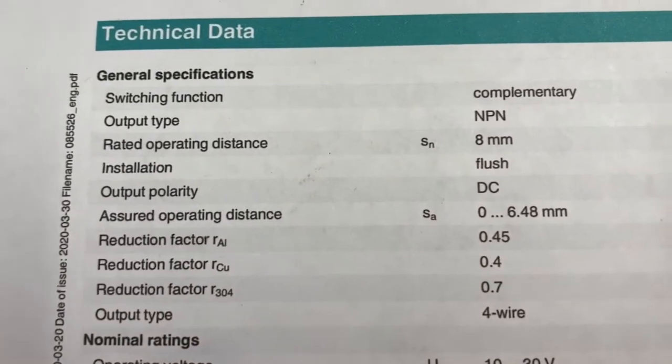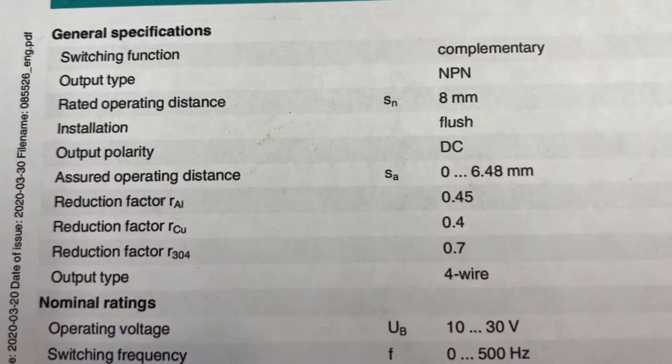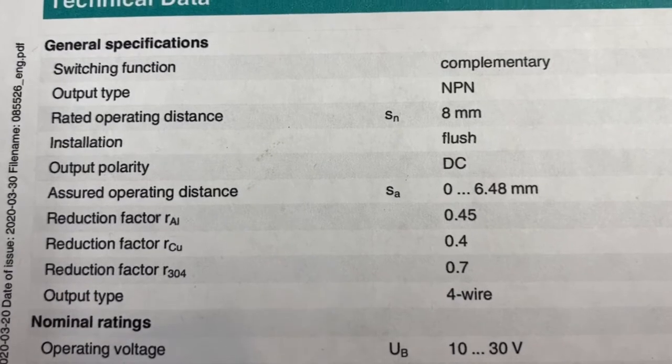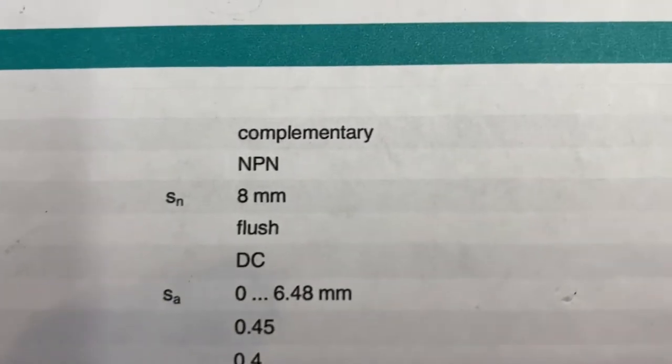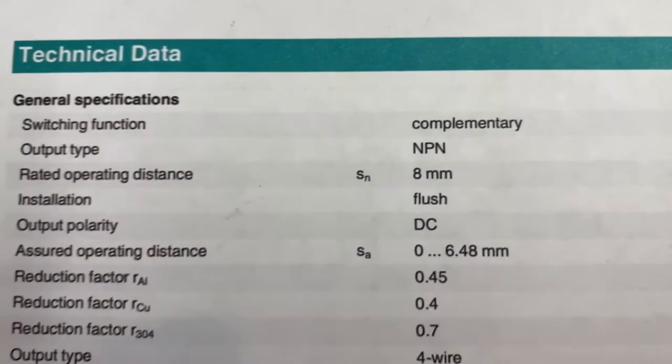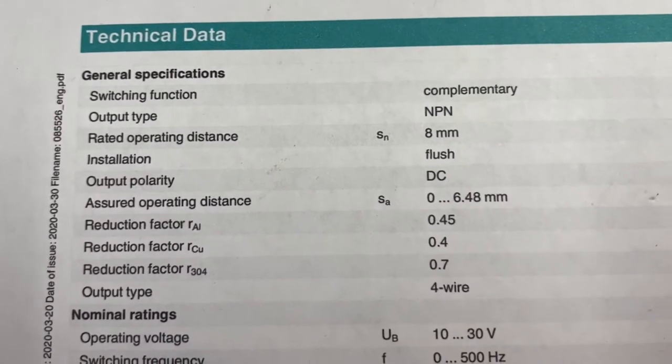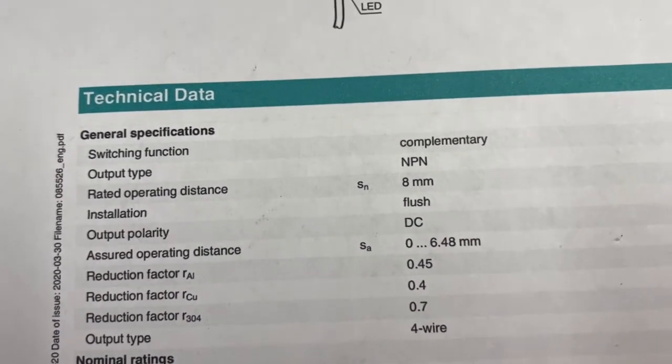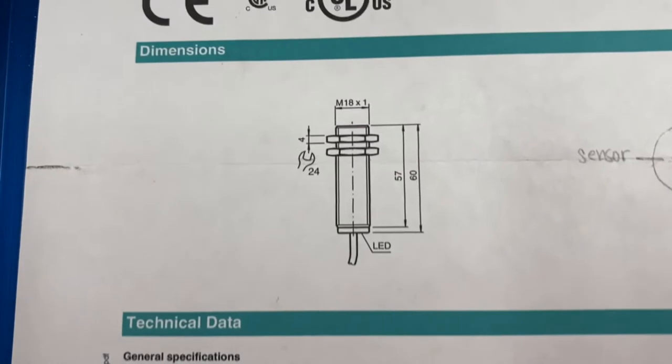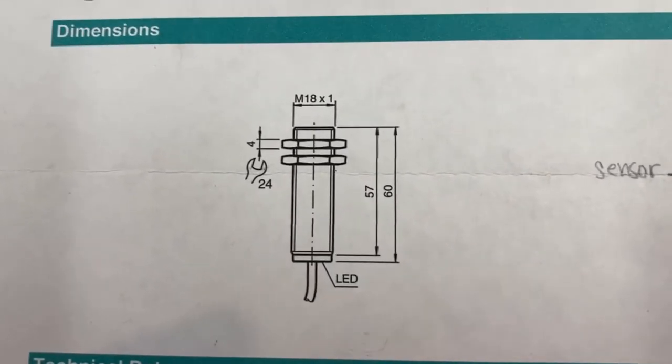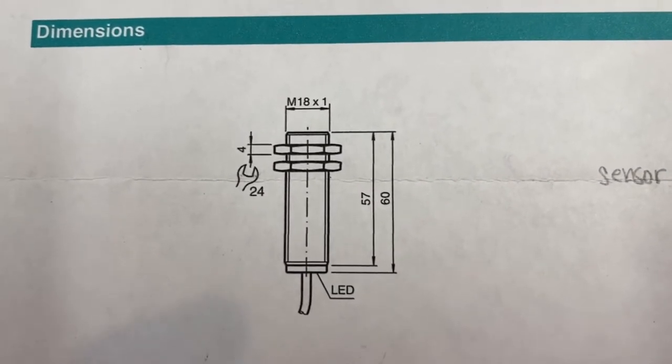You can see it has specs like this. One of the most important ones is the range in which it trips. And this one you can see it says eight millimeters. That's going to be very workable for this machine. First step is to get it mounted up, so let's do that, and then we'll move on to the wiring.